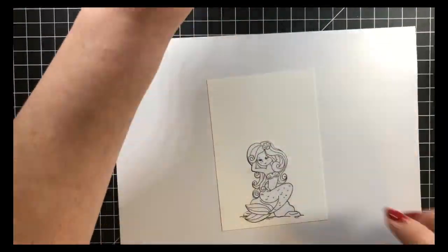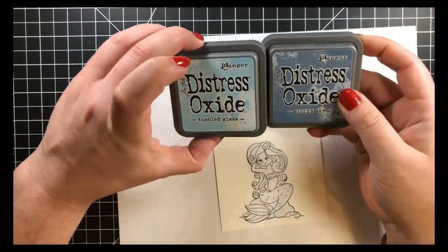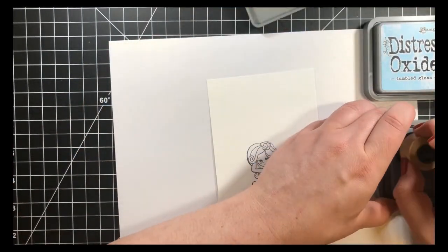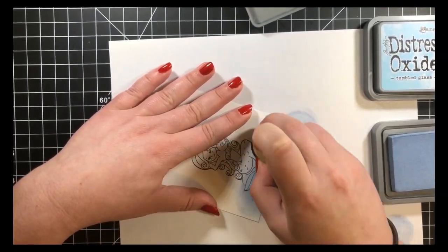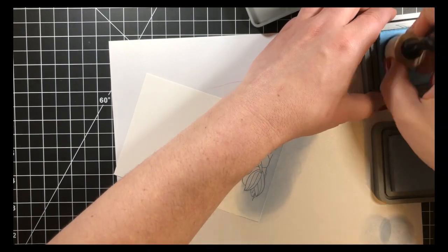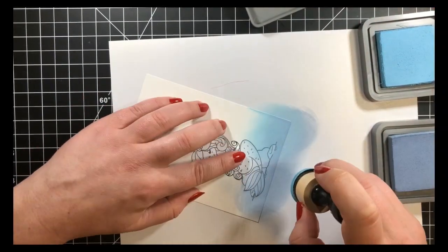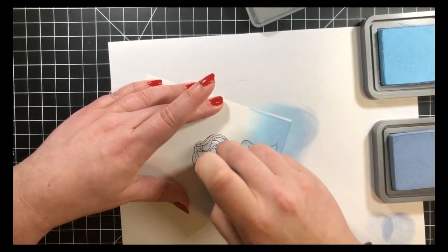Next, I will take those two colors of Distress Oxide inks, starting off with the Stormy Sky and I'm just putting a light layer down right on the base of the card and then I will blend that out with the Tumbled Glass.